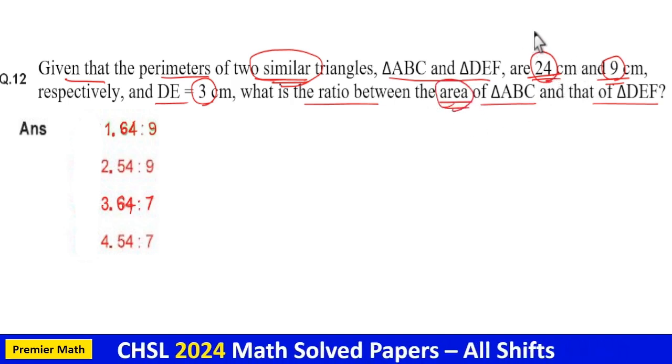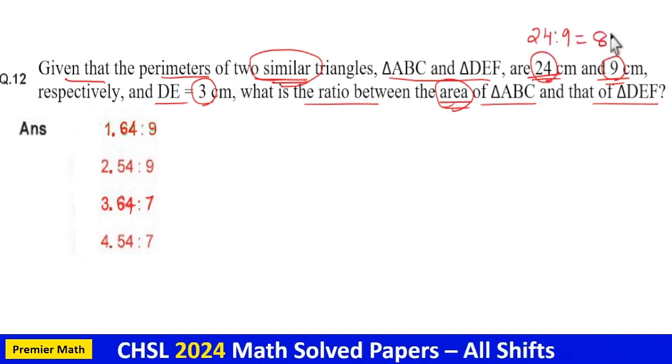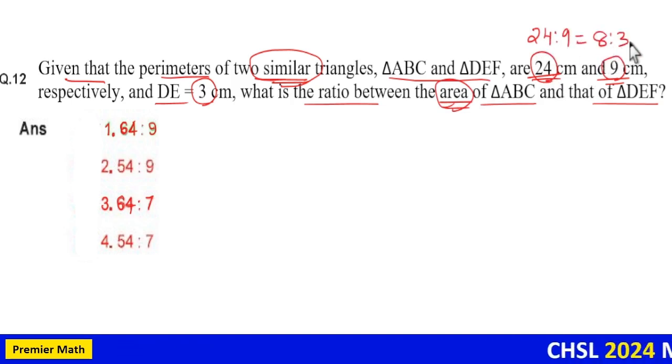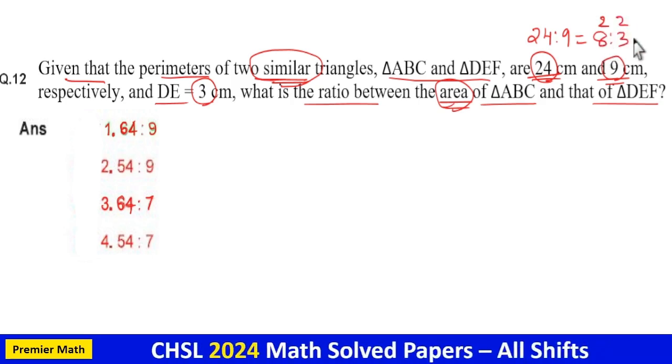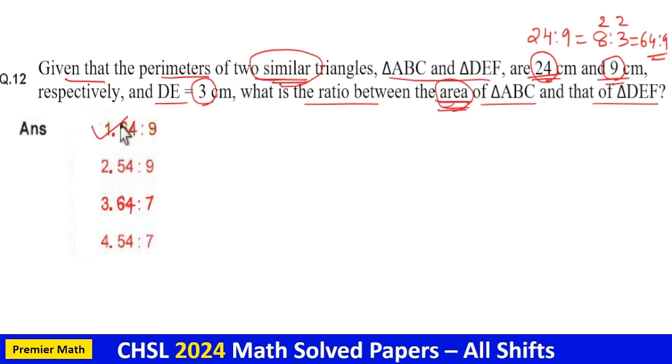Take the ratio of 24 is to 9. The ratio is 8 is to 3. Then square it. That is, 64 is to 9 is the ratio of area. So option 1 is your answer. I will explain the concept here.